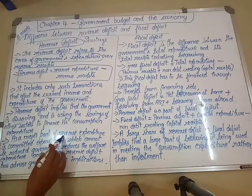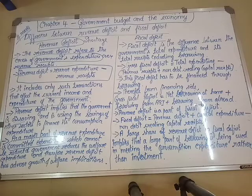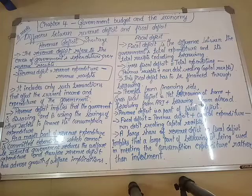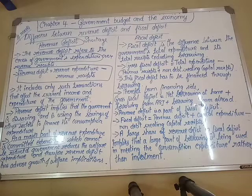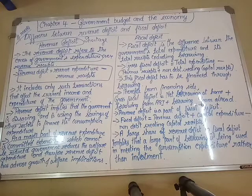As a major part of revenue expenditure is committed expenditure — committed expenditure means things like interest on loans. If you have taken a loan from a bank or financial institution, you are committed to pay the installment. You cannot skip it. Just like your parents might say they cannot even eat properly one day, but they must pay the bank or financial institution — that is committed expenditure. A large portion of revenue expenditure is committed expenditure which cannot be reduced.